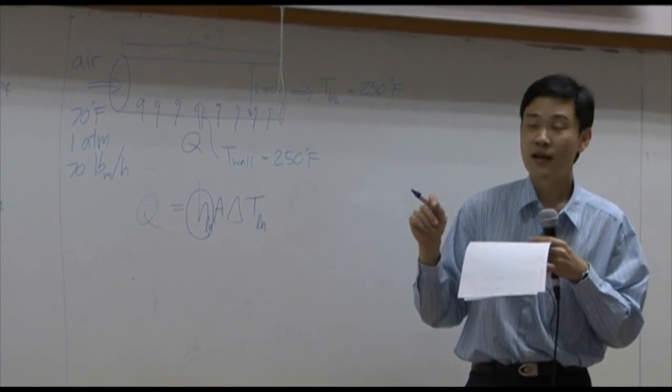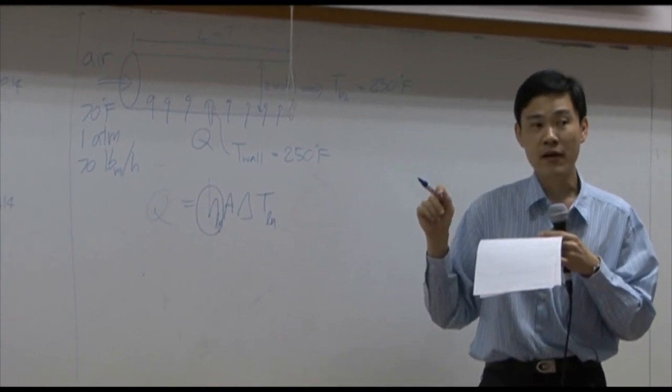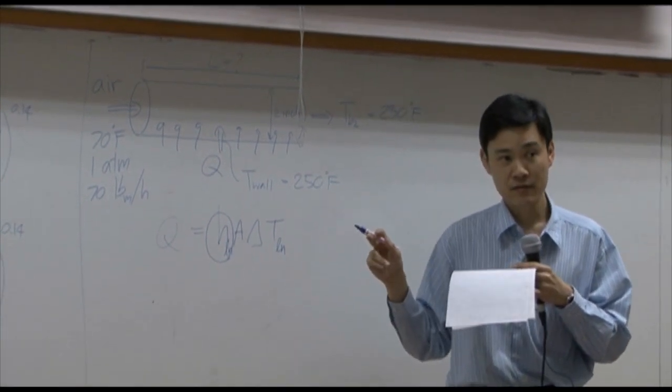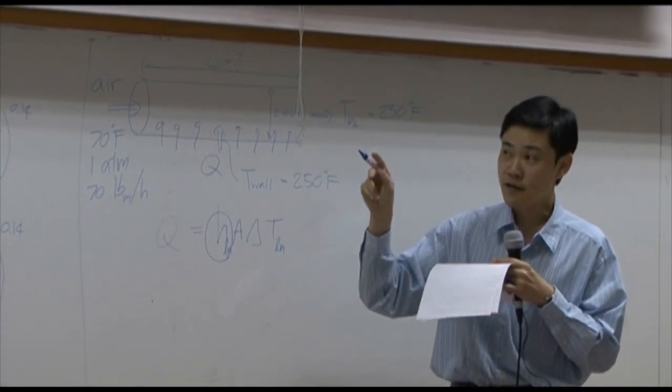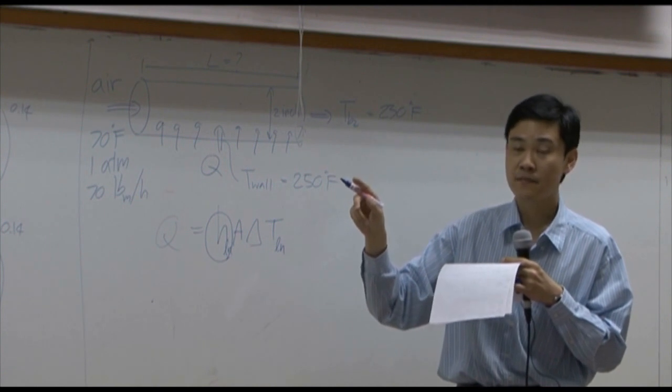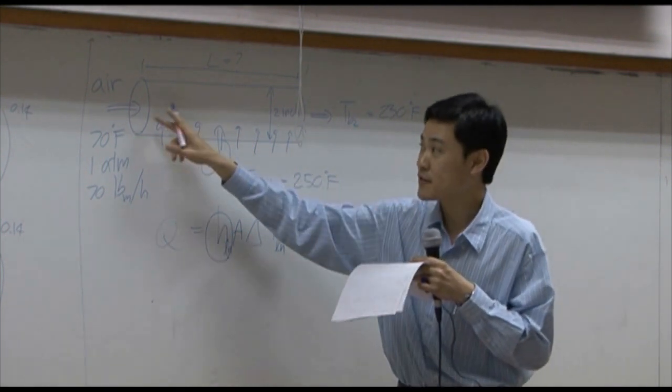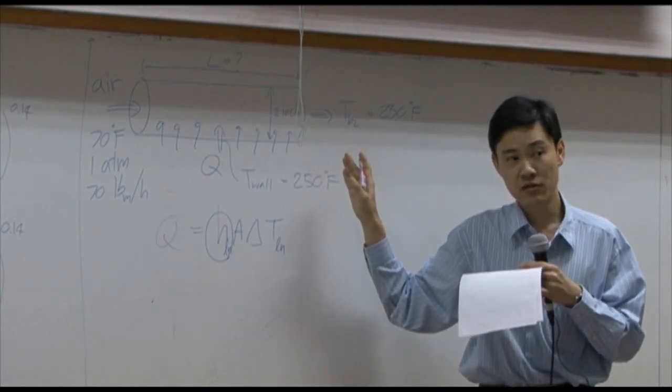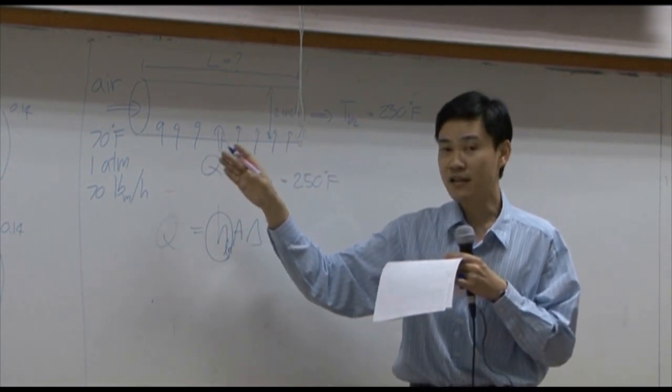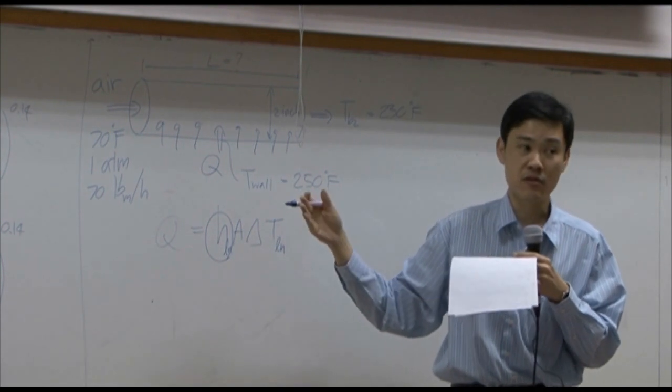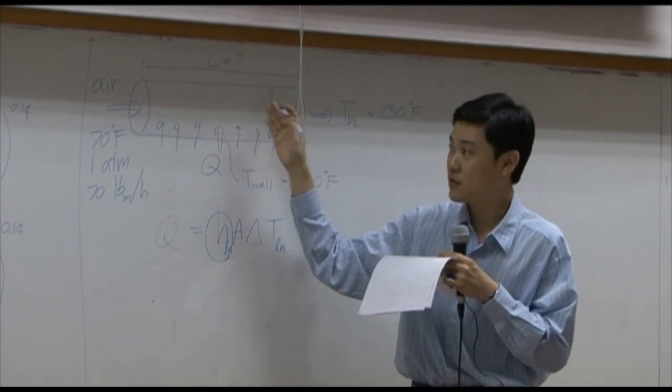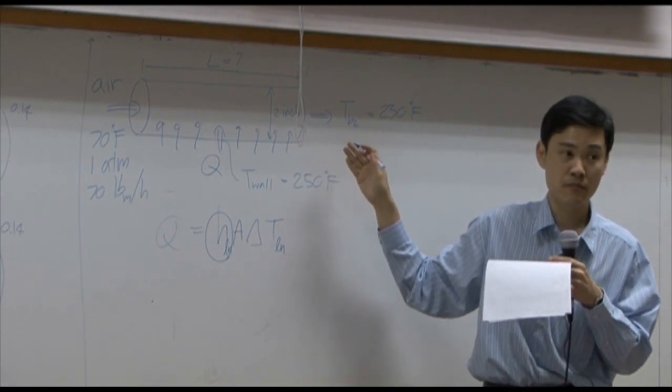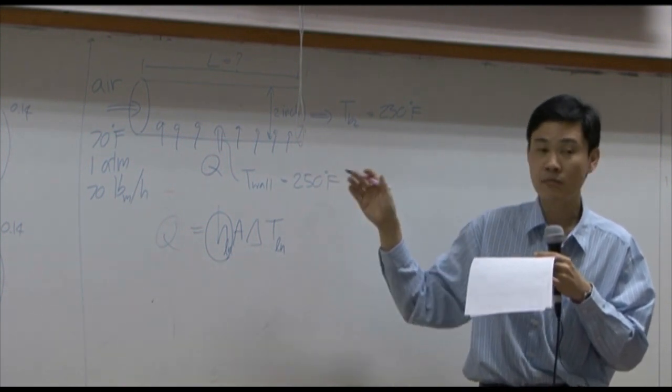Now, the question is, suppose I want to find Reynolds number so I can find Nusselt number later. Reynolds number is a function of density and viscosity. But density and viscosity right now change with respect to position. Density and viscosity change with respect to temperature mostly, but your fluid temperature changes with respect to position in this problem. So how can we approximate Reynolds number?